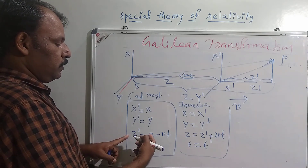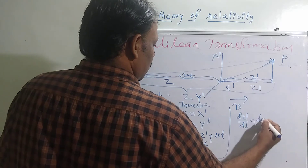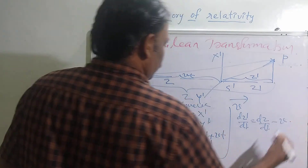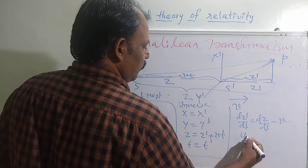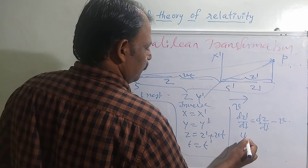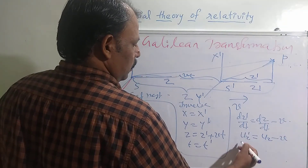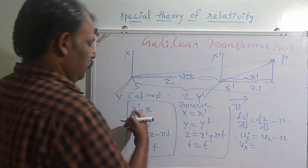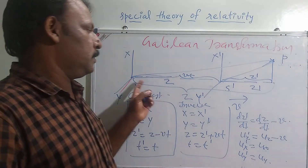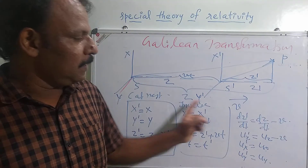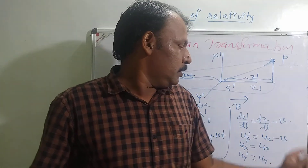Taking the differential of the equation Z prime equal to Z minus VT, the Z component of velocity transforms as UZ prime equal to UZ minus V. The X and Y components are: UX prime equal to UX, and UY prime equal to UY. Since the frame of reference is moving along the Z direction, only the Z component of velocity changes.